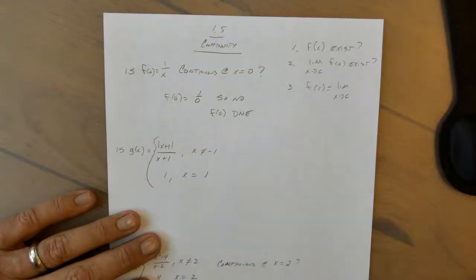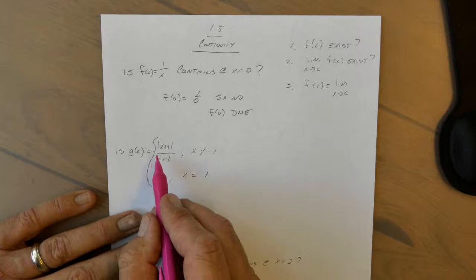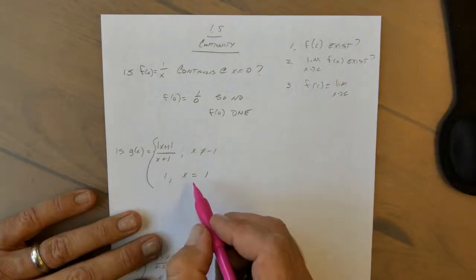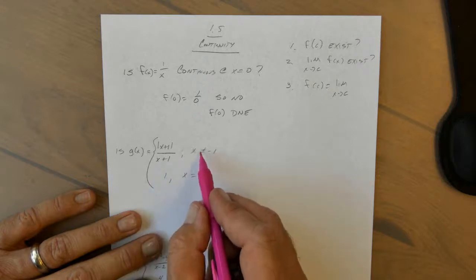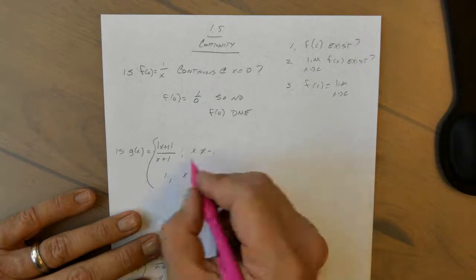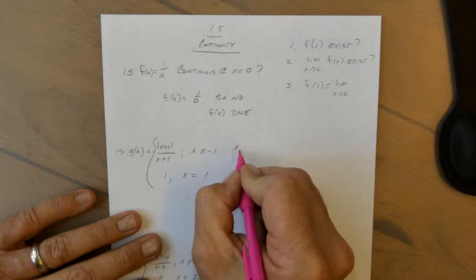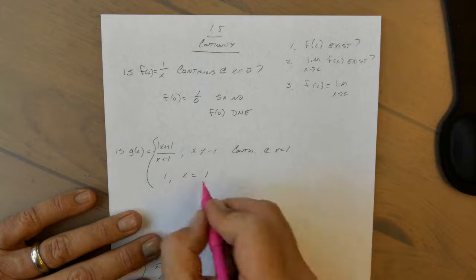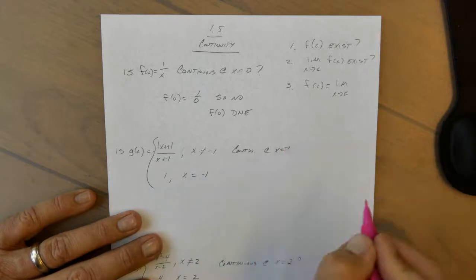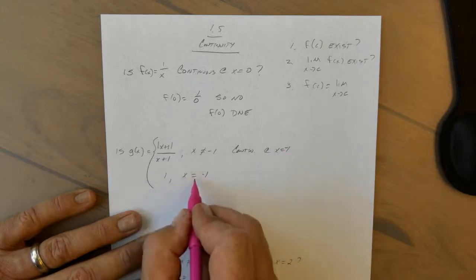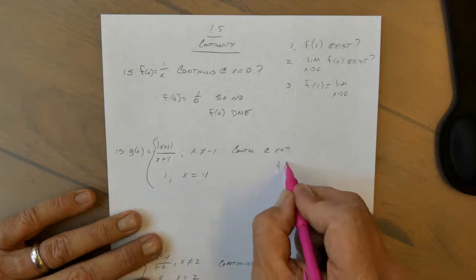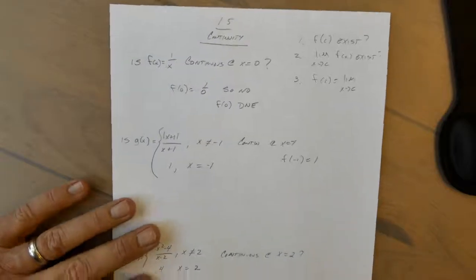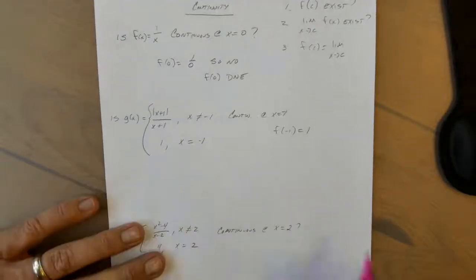Here we have a piecewise function and we're checking: is this continuous at x = -1? We see that the function is defined at negative one to be one, so we've checked off the first condition. Now we have to see if the limit exists.